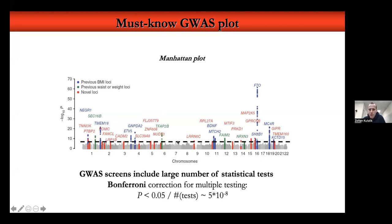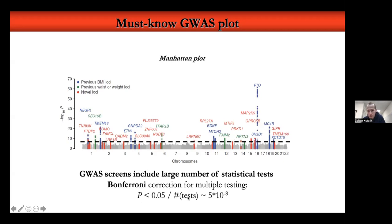Since we do roughly a million independent tests, we need to correct for it. Typically, Bonferroni correction ensures that we are controlling family-wise error rate — basically the probability of making even one mistake when we report these SNPs is below five percent. This is a very stringent criterion, and with this we can identify very stringently significant loci. But you need very large sample sizes because the effect sizes are very, very small.